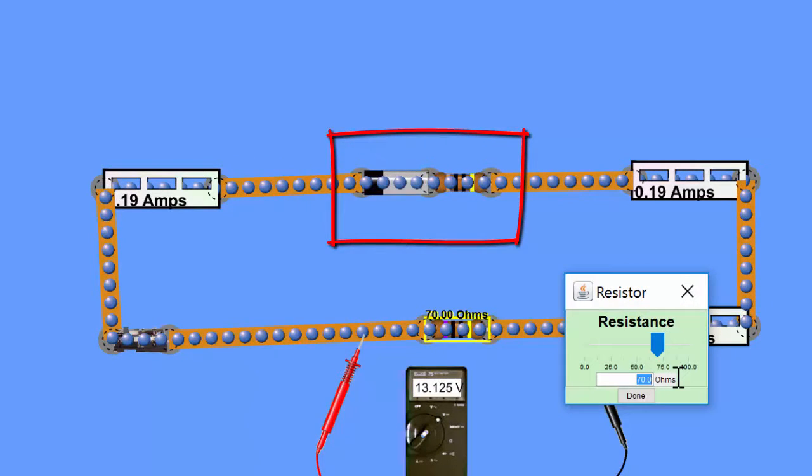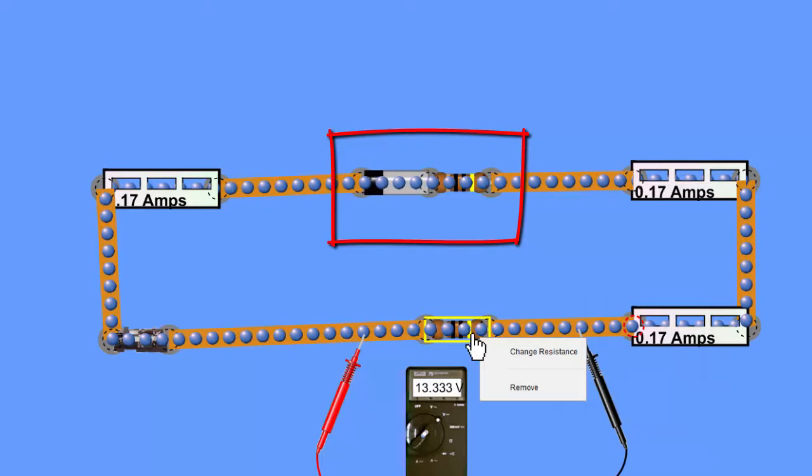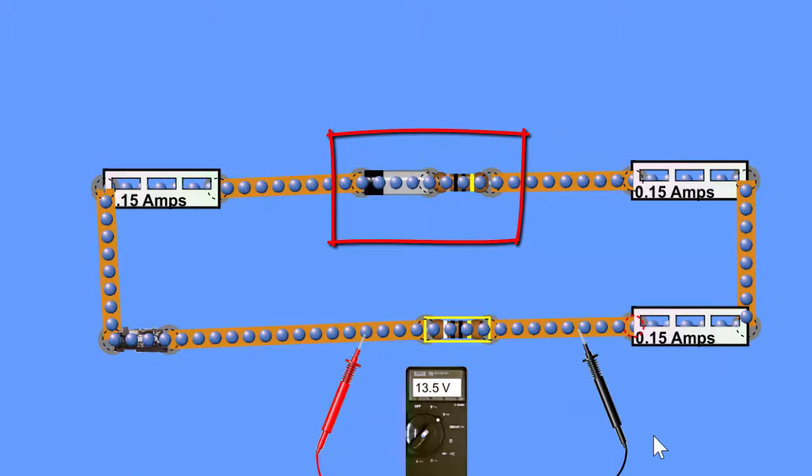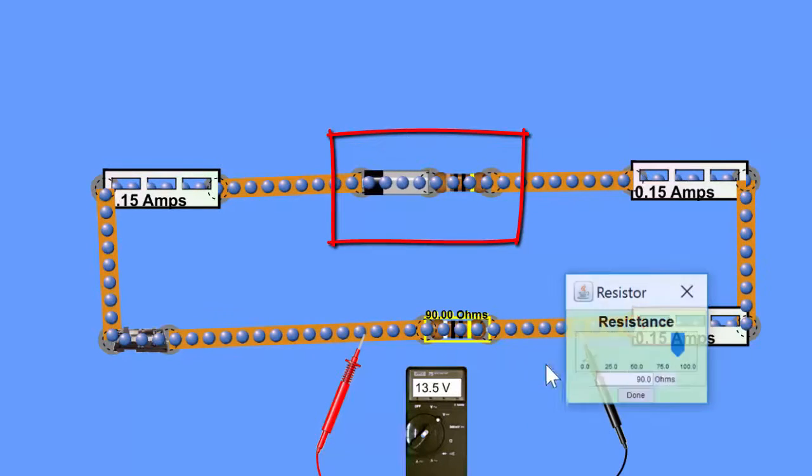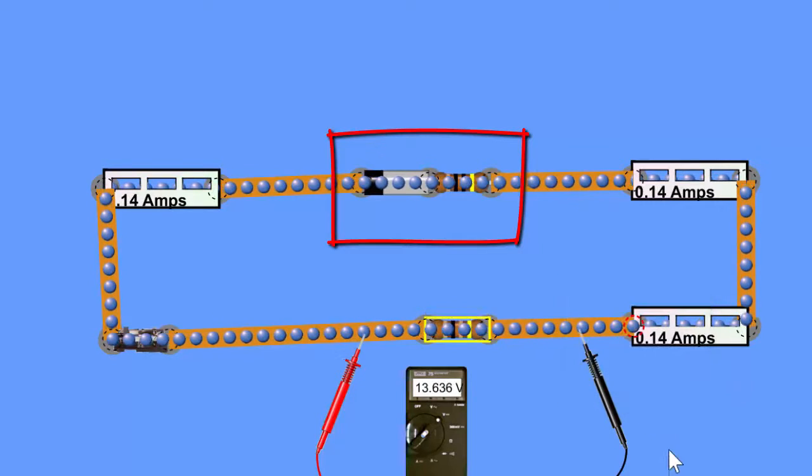But you would still be wondering, where is the additional voltage? When you put the voltmeter on the red box, either side of it, you're getting, with no other components in the circuit, you're getting 15 volts. But when you put a component into the circuit, you get less than this. You seem to have lost some volts.